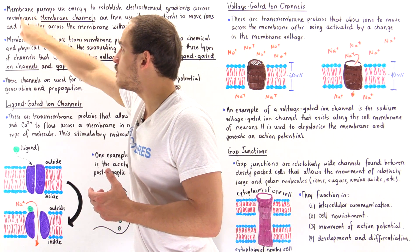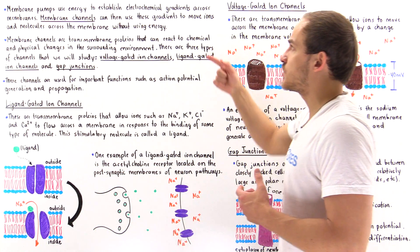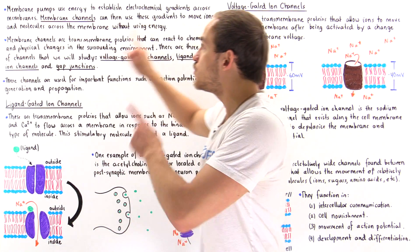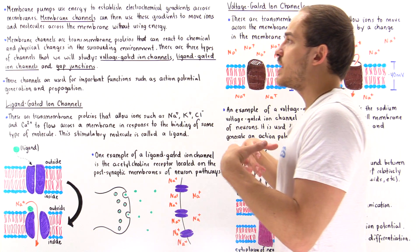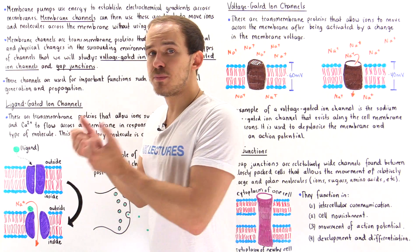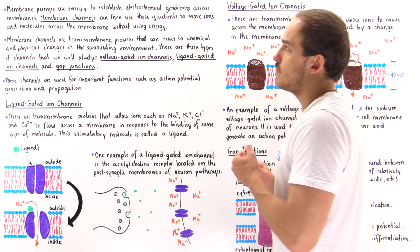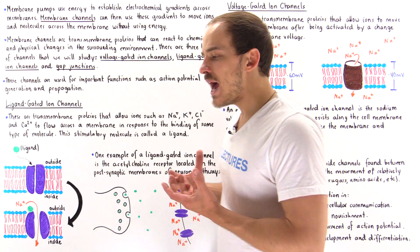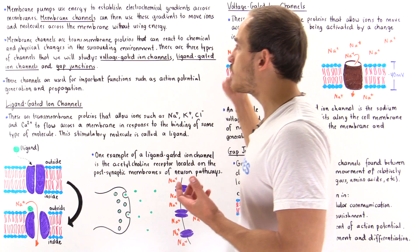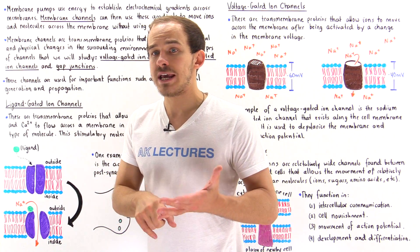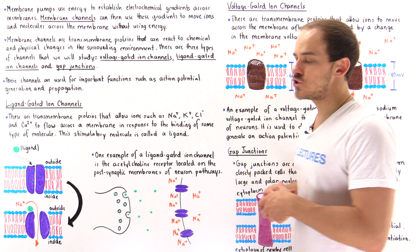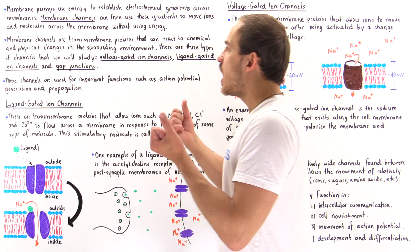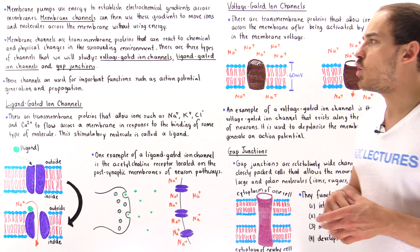Membrane pumps use energy to establish electrochemical gradients, but membrane channels use those same gradients to move ions and molecules spontaneously across the cell membrane without using any energy. These membrane channels respond to chemical or sometimes physical changes in the environment around that particular channel, and that is exactly what stimulates the opening or closing of that channel.